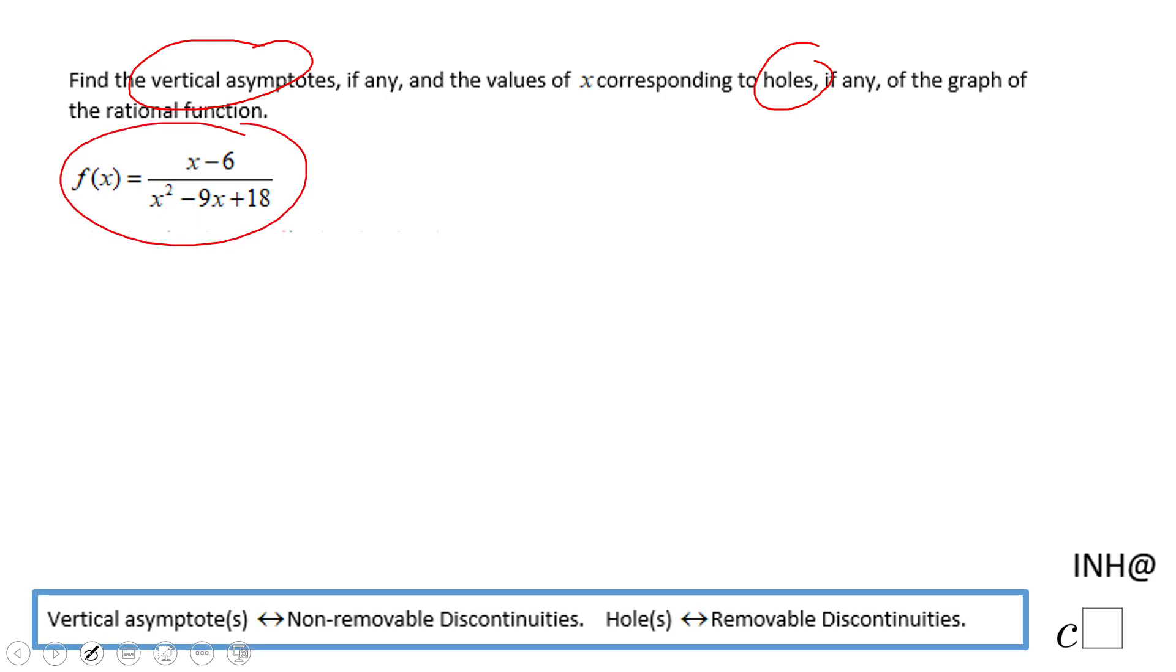For finding the holes or vertical asymptotes, we need to find the discontinuity. For finding the discontinuity, we need to set up the denominator equals to zero. x squared minus 9x plus 18 equals zero.